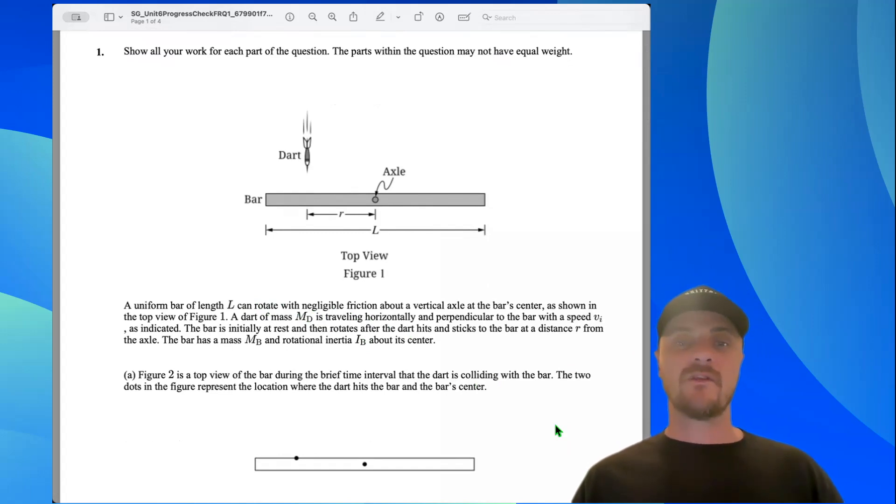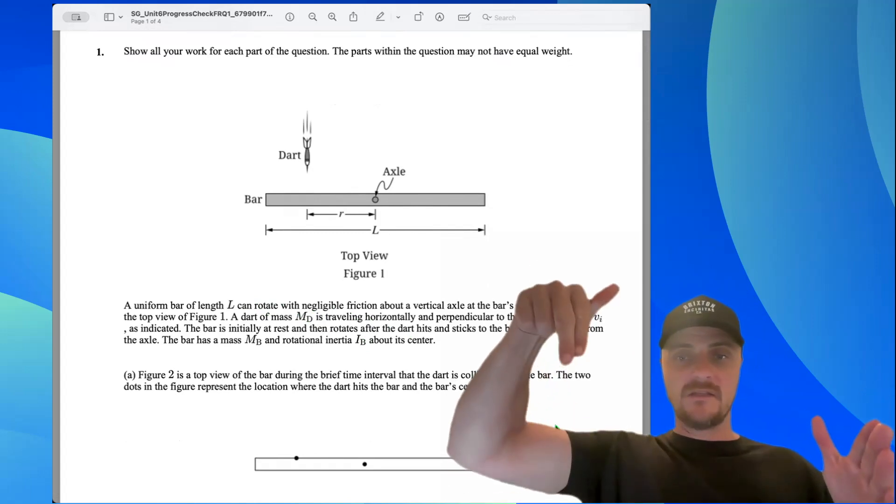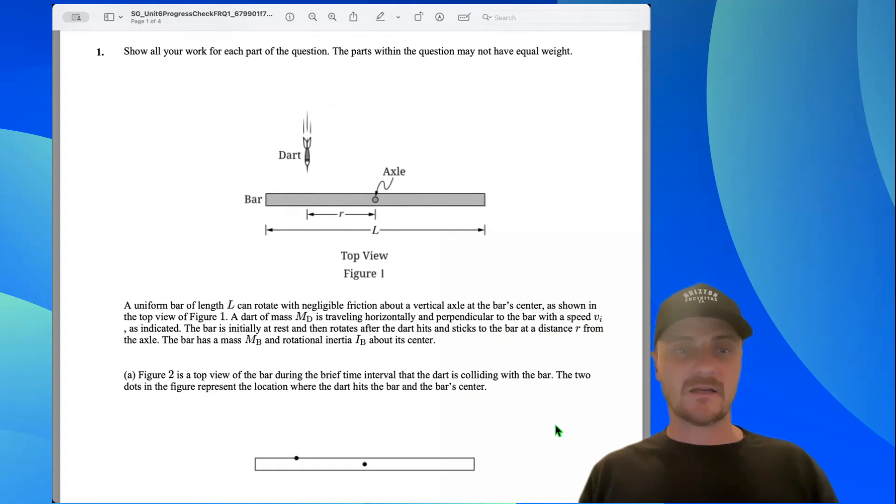A dart of mass md is traveling horizontally and perpendicular to the bar with speed vi as indicated. The bar is initially at rest and then rotates after the dart hits and sticks into the bar at a distance r from the axle.